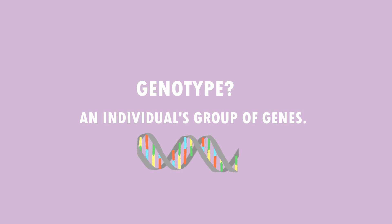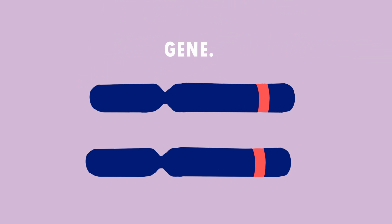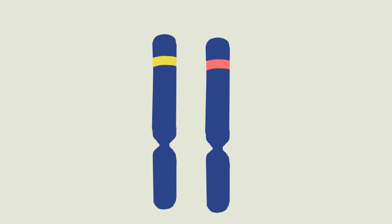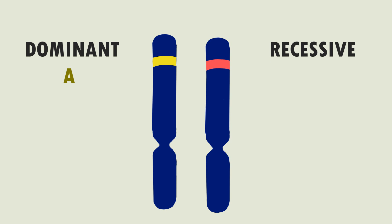So what's a genotype? A genotype is an individual's group of genes. A gene for a particular trait can exist in the form of two alleles. An allele occupies a specific spot on a chromosome called a locus which controls the same trait. One allele can be dominant, represented as a capital letter — in this case a capital A — and the other allele can be recessive, represented as a lowercase letter, so a lowercase a.